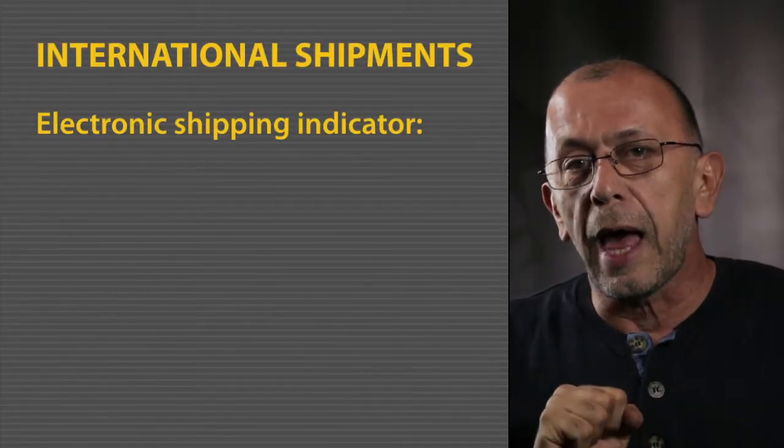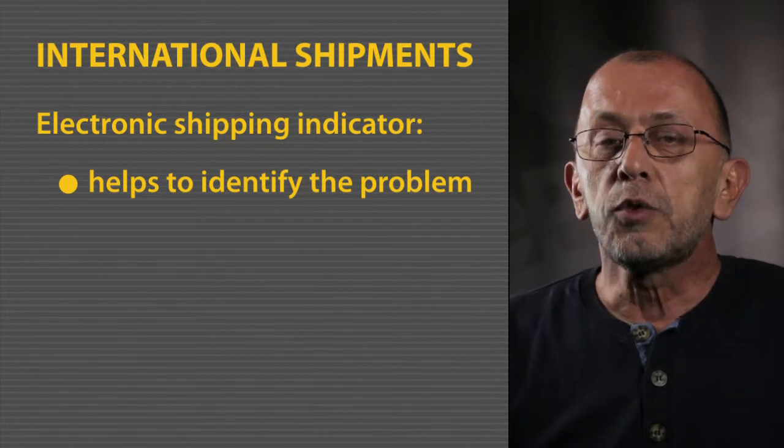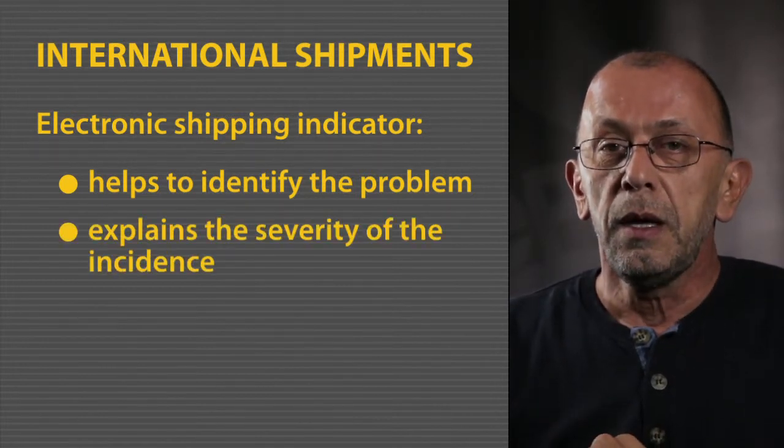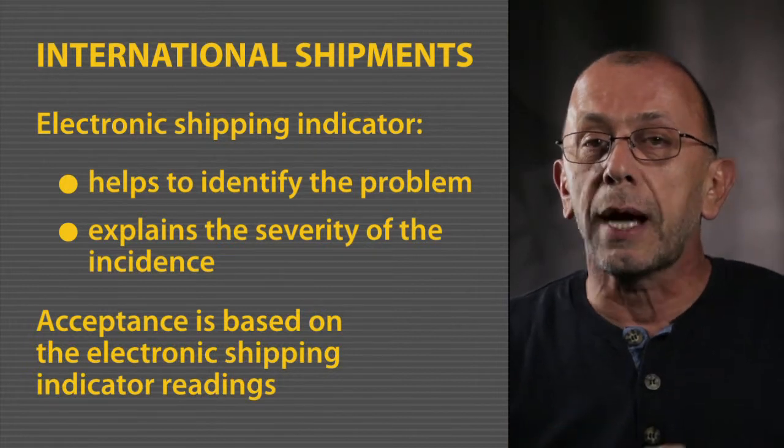Let's analyze the situation step by step. First, international shipments. In the case of international shipments, if there is a temperature excursion, the electronic device will help us identify the problem, understand its severity, and decide whether to accept or reject the shipment. In all international shipments, all boxes must be opened and electronic temperature monitoring devices must be read. If there is no alarm, the shipment should be accepted. When there is no alarm, we do not expect any change in VVM status. However, you should also read the VVM status and record it in the vaccine arrival report.